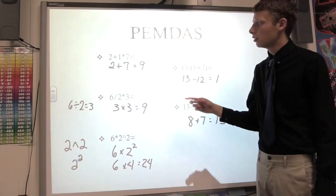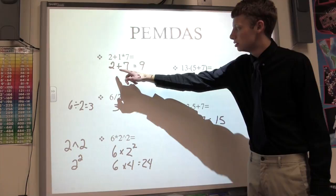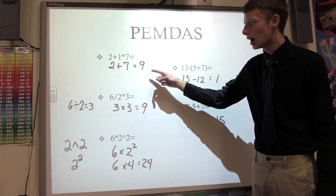So for the first one, we have 2 plus 1 times 7. Multiplication comes before addition in PEMDAS. So we're going to do 2 plus 7, because 1 times 7 is 7, and the answer is 9.